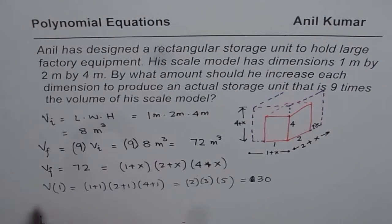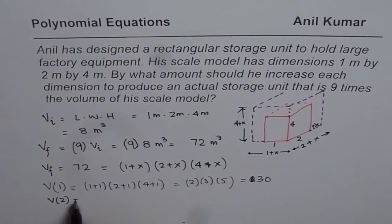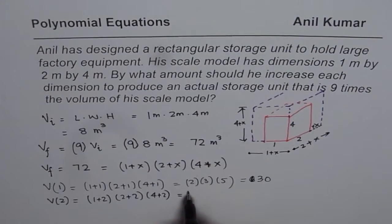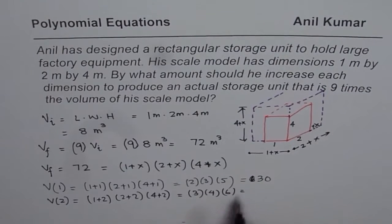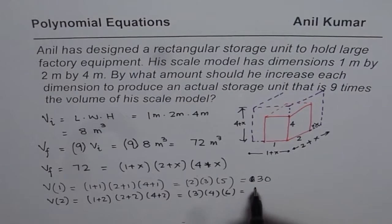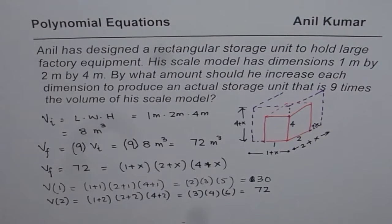So what we can find now is, what is the volume when this increases by 2? So we can substitute 2 here. So we get 1 plus 2 times 2 plus 2 times 4 plus 2, which is equal to 3 times 4 times 6. Now 3 times 4 is 12 and 12 times 6 is 72. So what you get is 72.